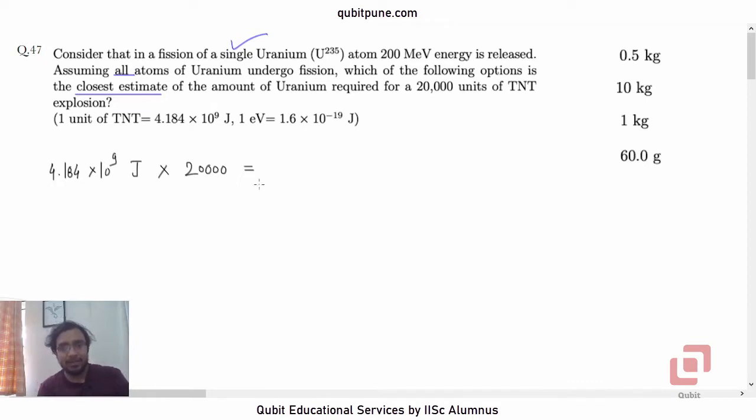So capital N is the number of atoms which will undergo fission, because they are saying all atoms. So N times the energy that we get from one fission of uranium atom. One fission gives 200 MeV, so 200 × 10^6 electron volts. But we would like to have this in joules as well, so we should multiply this by 1.6 × 10^-19, so this will also be in joules now. Remember, N is the number of atoms which we would like to find. 200 × 10^6 × 1.6 × 10^-19 is the energy that we will get through fission of a single uranium atom.